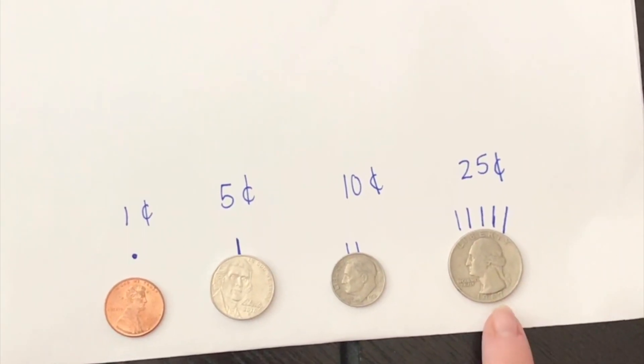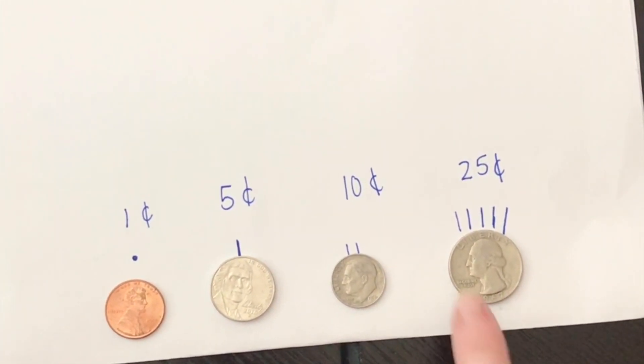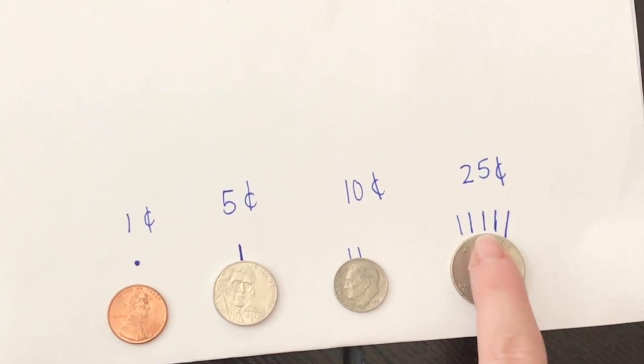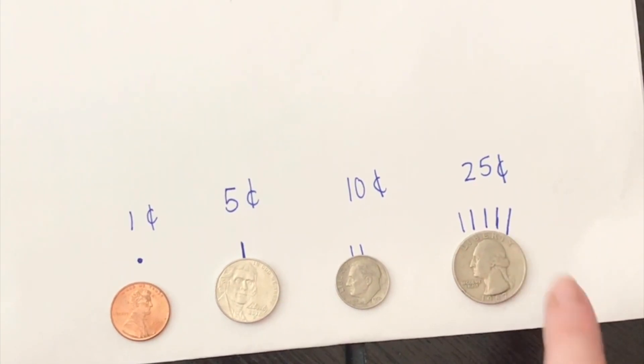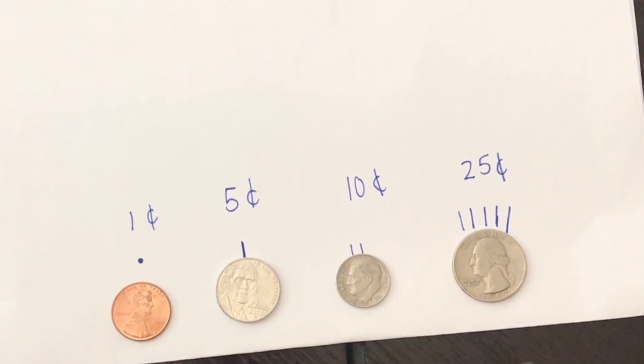Now let's look at our quarter. Our quarter has five hairs. Let's count them up. Five, ten, fifteen, twenty, twenty-five. Our quarter is worth twenty-five cents.